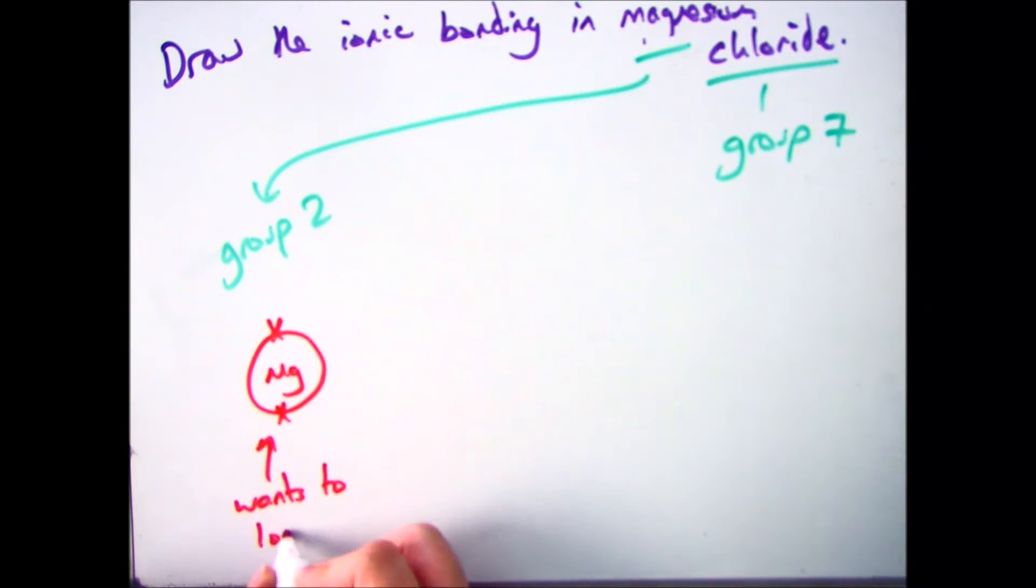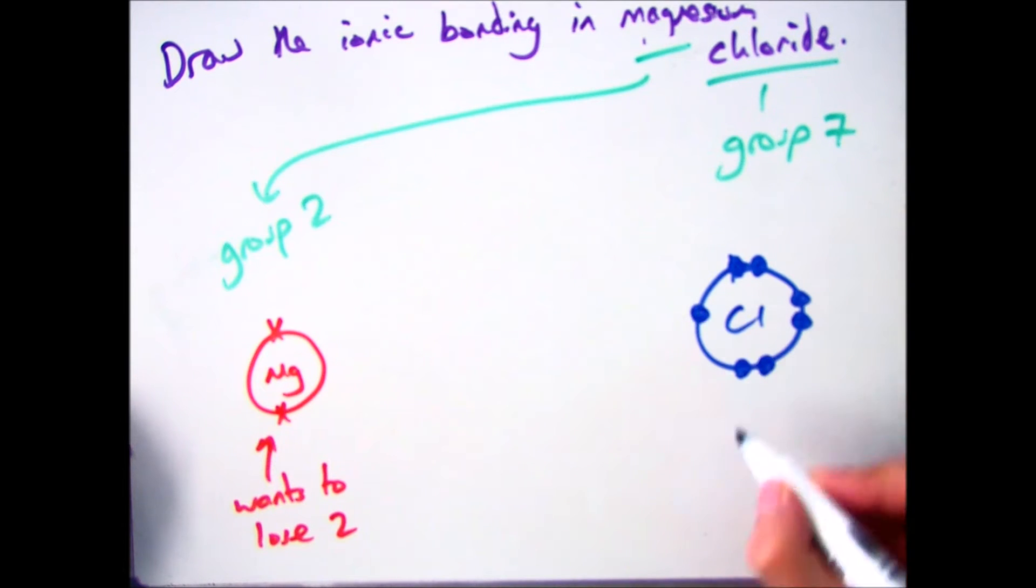So here we have magnesium, which wants to lose two electrons because it's in group 2 and has two electrons in the outer shell. And then we have chlorine, which is in group 7, so it has seven electrons in the outer shell and wants to gain one.